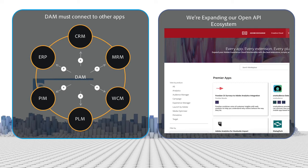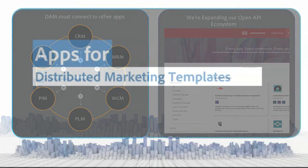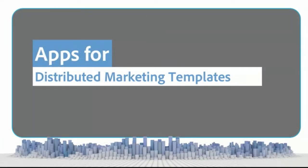Every year we like to focus on a different type of partner, looking at different types of apps — for example, apps for distributed marketing templates, where additional teams take assets and use a template to make a localized version. We provided an API to connect to the digital assets, our UI, our workflow system, and everything across the Exchange that other apps use to extend existing functionality in our platform for content management, as well as InDesign server.